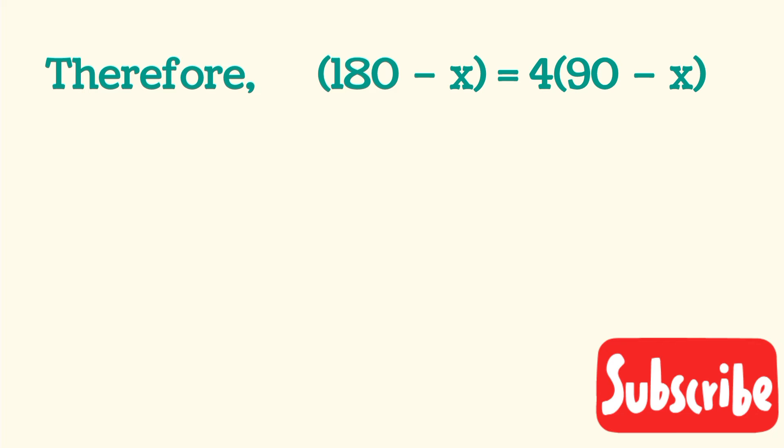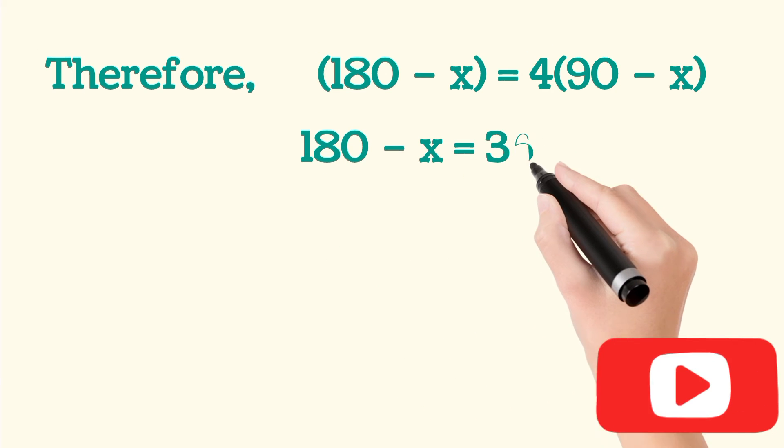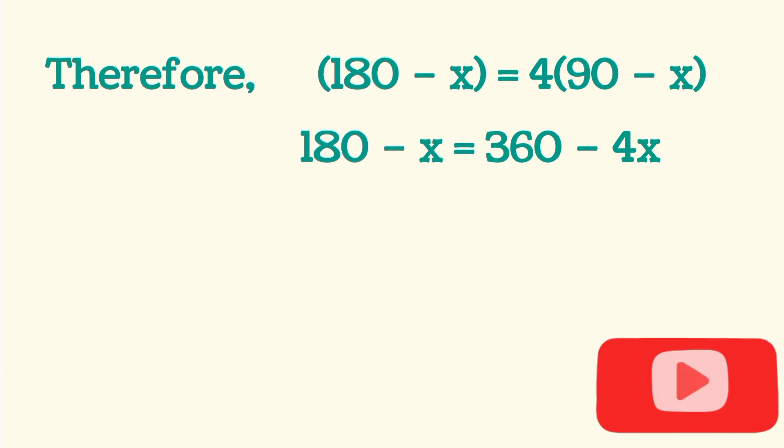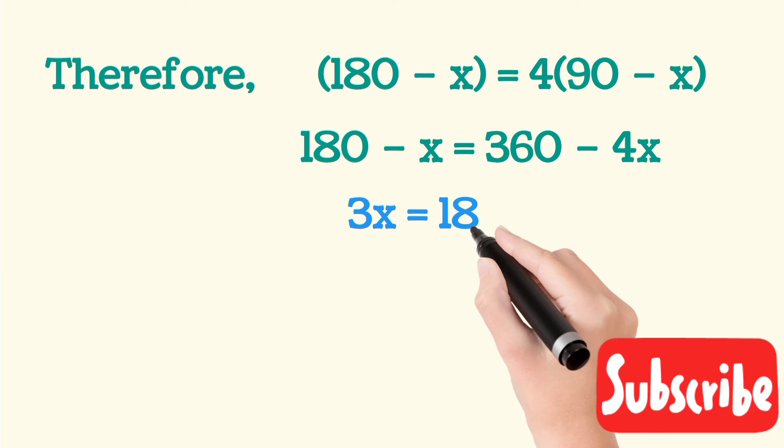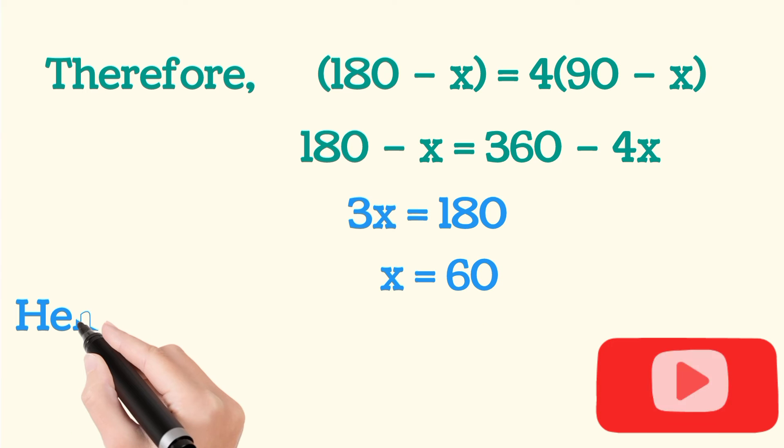On solving this, we get 180 - x = 360 - 4x. Simplifying further, we get 3x = 180, which gives x = 60 degrees.